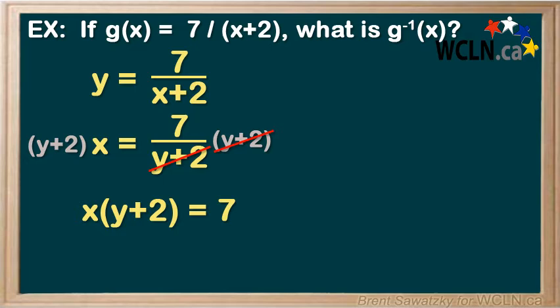Now, there are two approaches from this point that we could take. We could divide both sides by x — that's a nice move forward — and others might want to distribute the x. Let's go with the distribution approach, just to show that it works out fine, even though it has an extra step or two. Always good to look for the easiest solution, but it's also good to be confident that as long as you're using legitimate steps, you can arrive at the right answer multiple ways. So, distributed, we would have xy plus 2x equals 7.